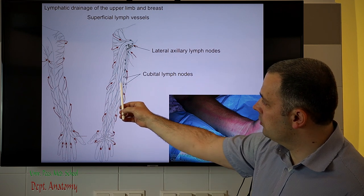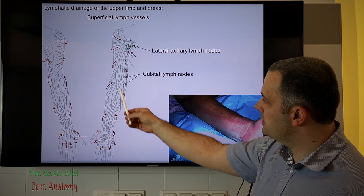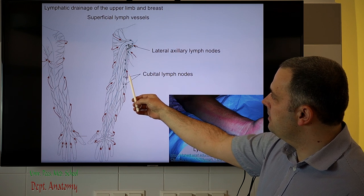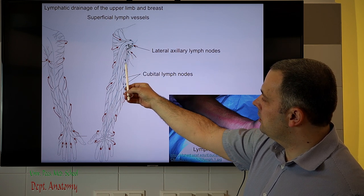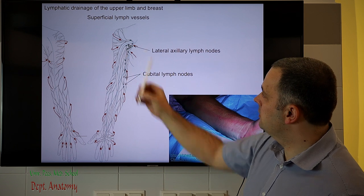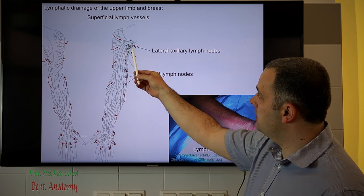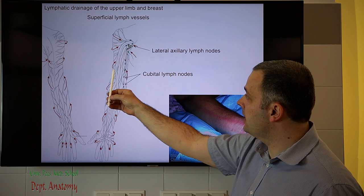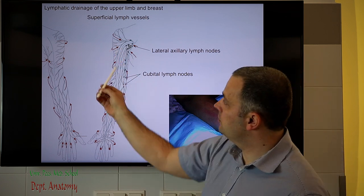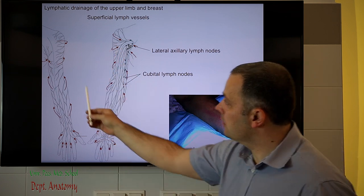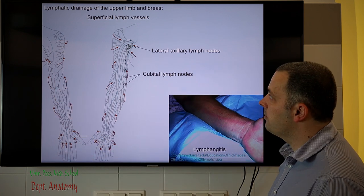The first-order lymph nodes are the cubital lymph nodes in the cubital fossa. Then the lymph fluid moves on into the lateral axillary lymph nodes, which may also collect lymph fluid directly from the shoulder and the dorsal side of the upper limb.